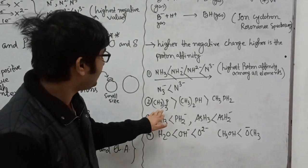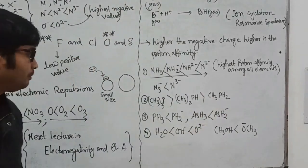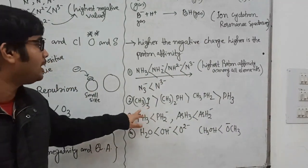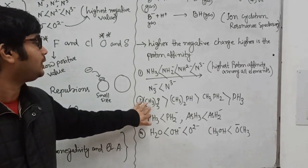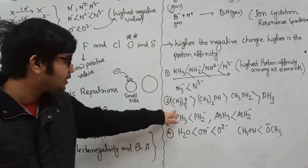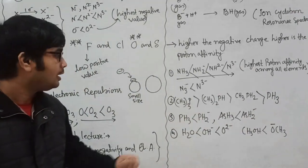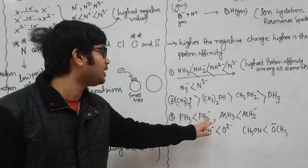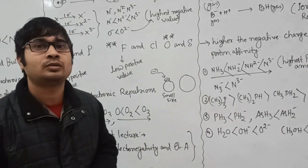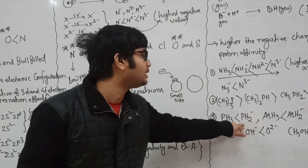Consider trimethylphosphine, dimethylphosphine, methylphosphine, and phosphine. Trimethylphosphine has the highest proton affinity because of the inductive effect — the methyl groups increase the electron density on phosphorus, making it easier to attract an extra proton. The order is: trimethylphosphine > dimethylphosphine > methylphosphine > phosphine. Between phosphine and phosphine ion (PH₂⁻), as per the rule — higher the negative charge, higher the proton affinity — PH₂⁻ will have higher proton affinity. Higher negative charge means a greater tendency to attract the positively charged proton.